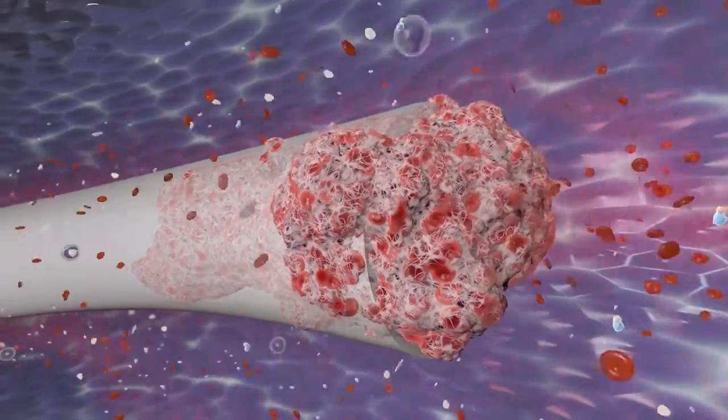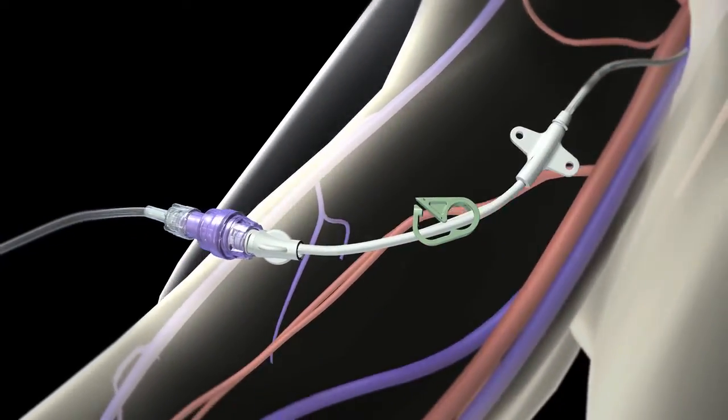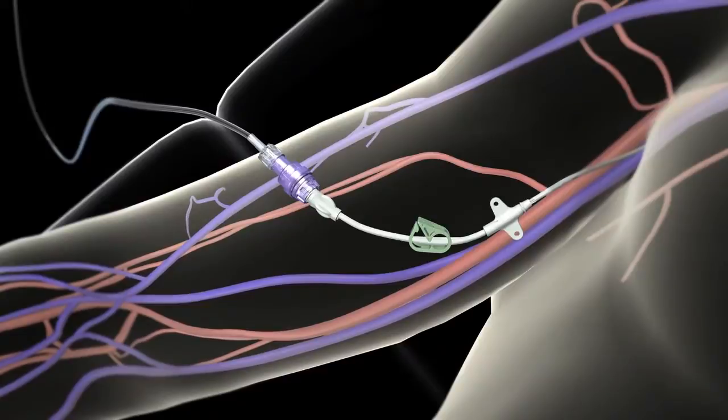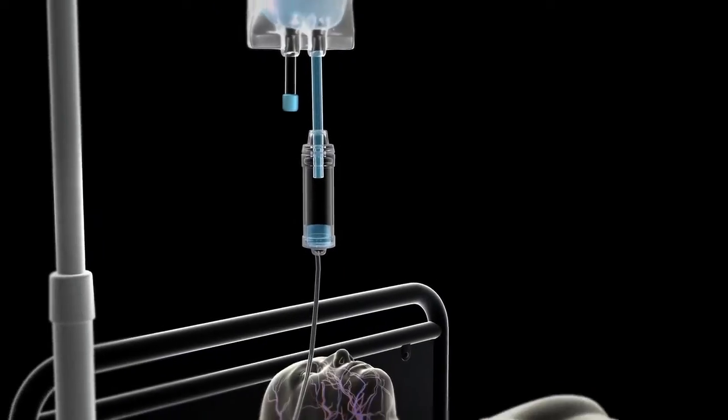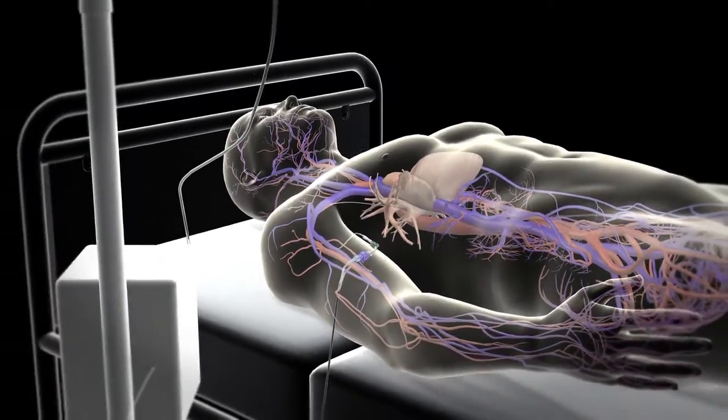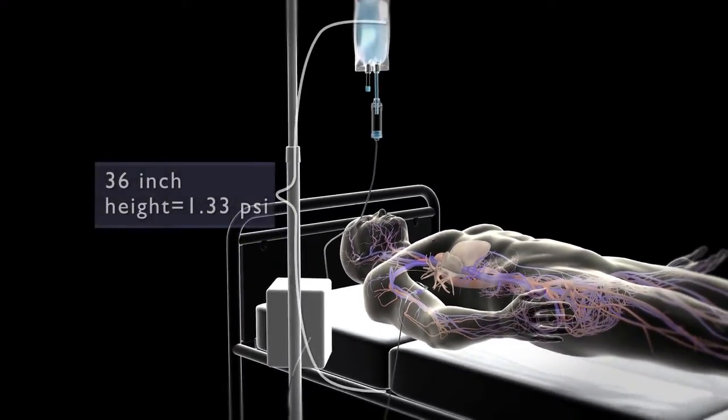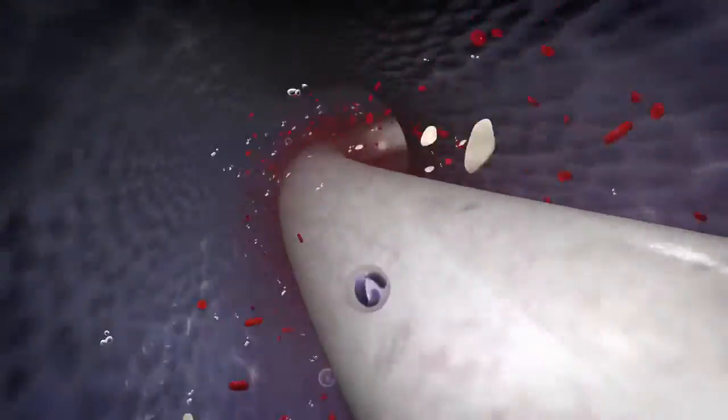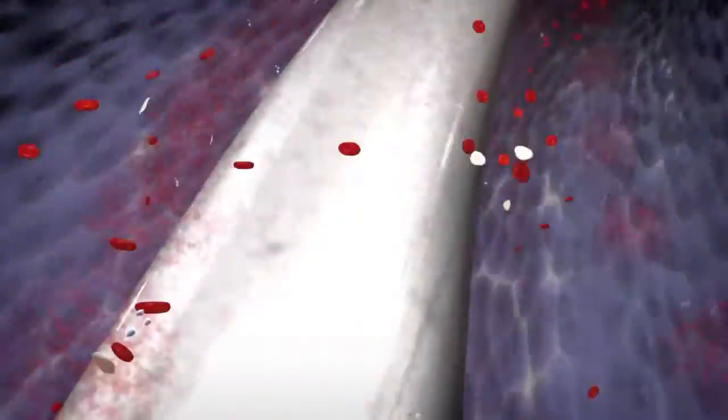It is essential to keep open all IV catheters. A container 36 inches above the venipuncture site creates an infusion pressure of approximately 1.3 pounds per square inch. This is adequate pressure to overcome the patient's vascular pressure.